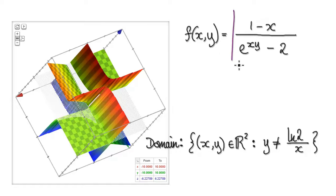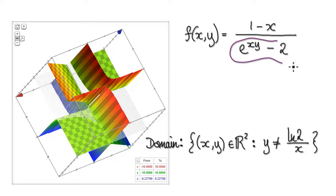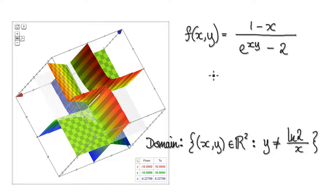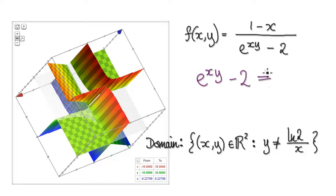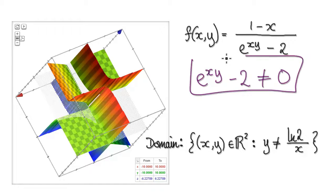When it comes to domain, try and figure out what will break it down. If the denominator equals 0, then the whole thing will break down. So we need to demand that this denominator here cannot be 0.